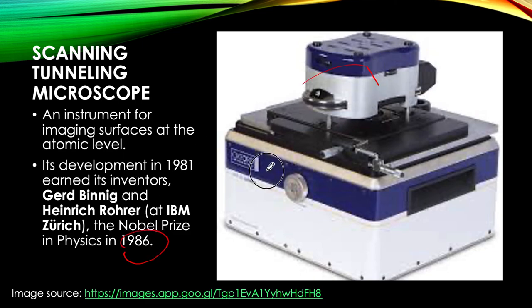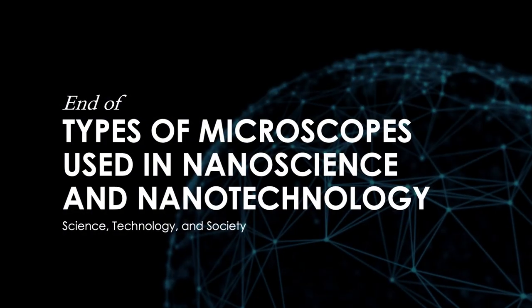So to recap, we have three microscopes: the electron microscope, the atomic force microscope, and the scanning tunneling microscope. This is a short video on the types of microscopes used in nanoscience and technology. The next part, which will be quite long, will cover remarks in nanotechnology, applications in the Philippines, advantages, disadvantages, and connections with certain fields.